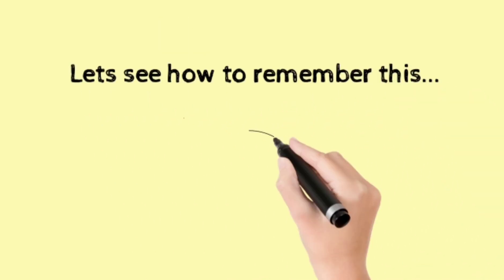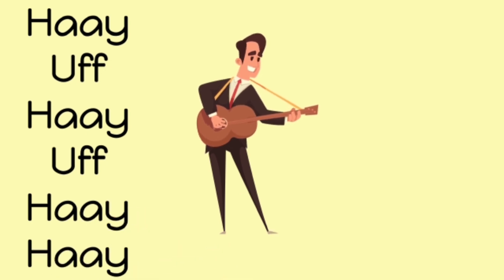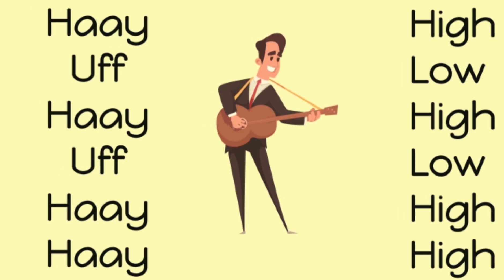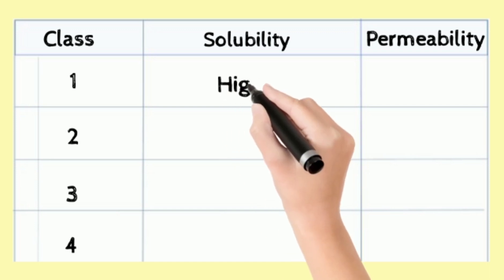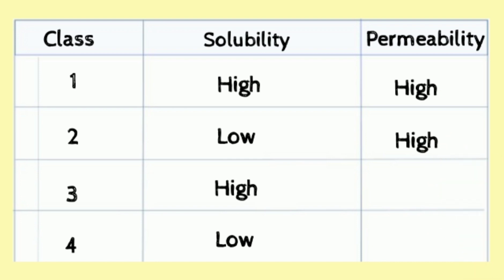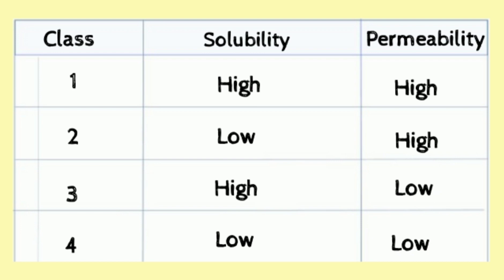You may have heard a song with a rhythm like 'high up, high up, high high' — in place of 'up,' remember 'low,' so the sequence becomes: high, low, high, low, high, high. Starting from the solubility column, write high, low, high, low. Then the remaining — high, high — goes into the permeability column. The last two remaining entries are low, low. Using this sequence, you can fill in the entire BCS chart in under 30 seconds in any exam.